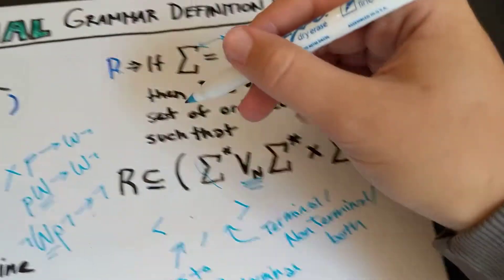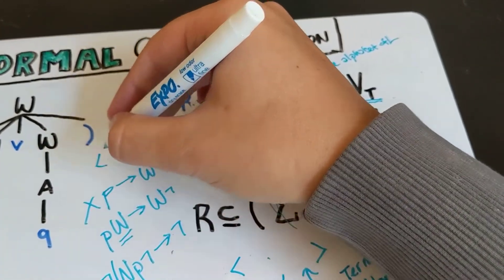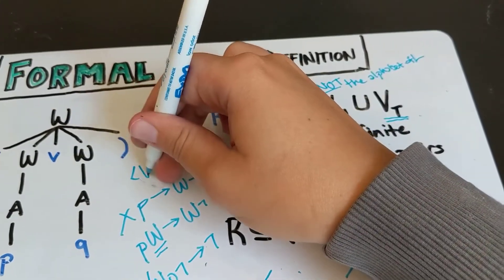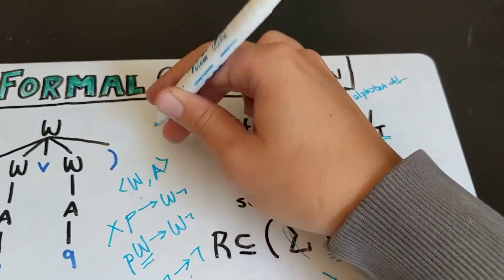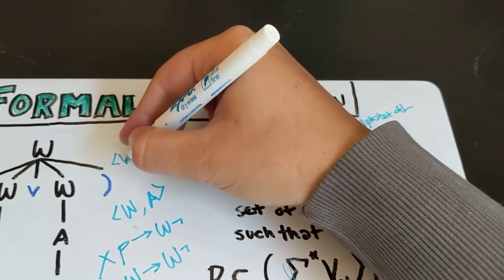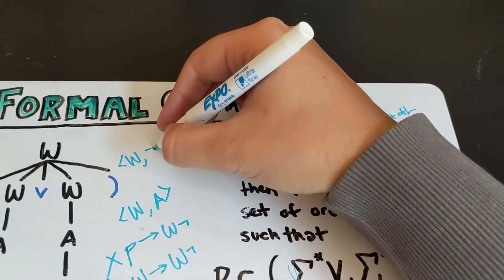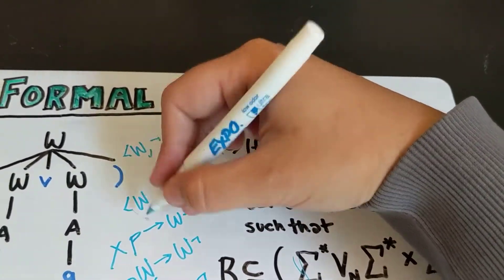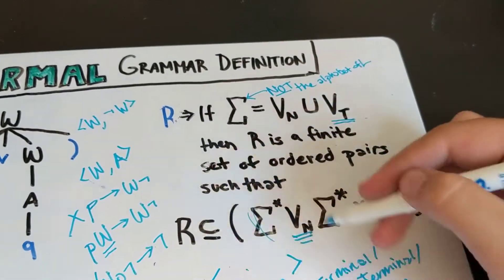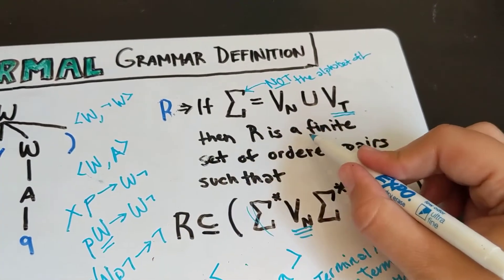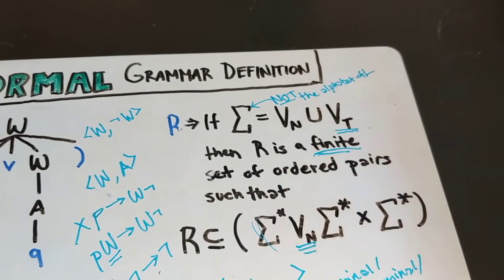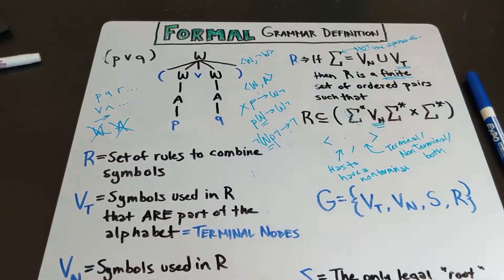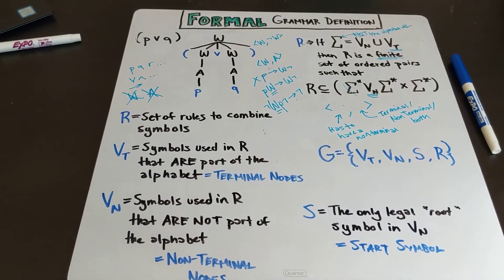What this is also saying is that we're rephrasing these rules in our formal definition — something like 'a well-formed formula is made up of an atomic statement,' or 'a well-formed formula is made up of not, and then a well-formed formula.' We're rephrasing exactly how we're putting these into a set, and R is just a finite set of these things. That's important — you can't have an infinite set of rules. This has been a description of how we define a formal grammar in formal language theory.